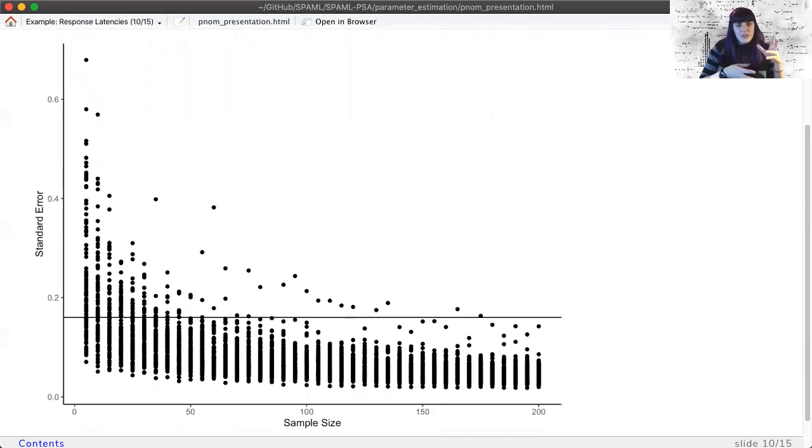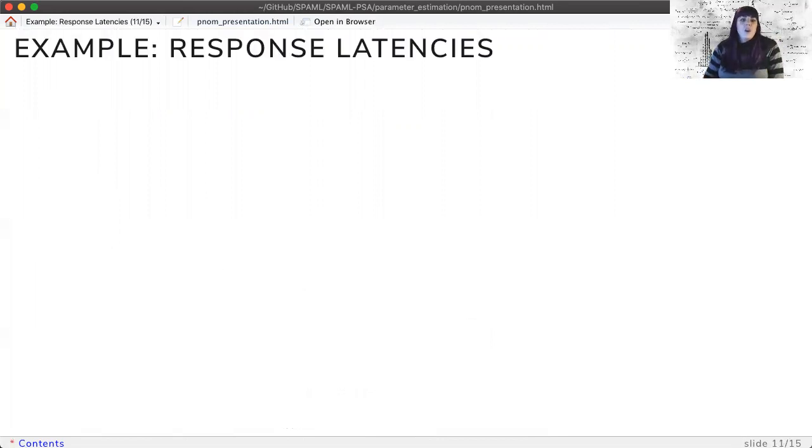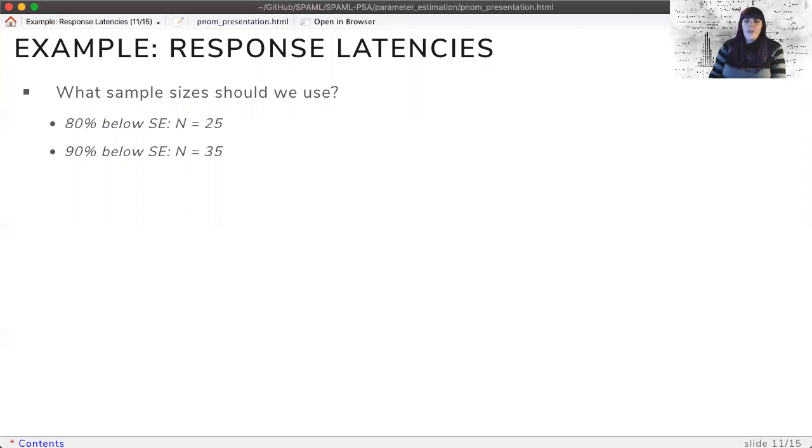Given the simulations, what should the sample size be? At n equals 25, we found that 80% of our samples would meet the standard error criteria, and we would need to increase that sample size to 50 to find that 95% of standard sampled words meet our criteria.